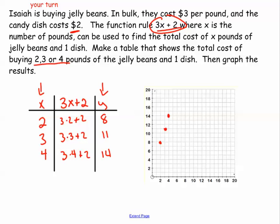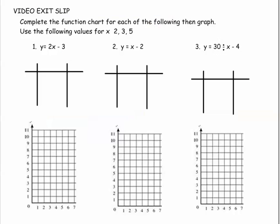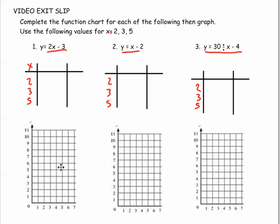Now it is your turn, kiddos. You have three problems for your exit slip. I'm going to give you that x is equal to 2, 3, and 5. Here are your function rules for three different problems. You're going to plug in these values for x: 2, 3, and 5 for all of them. Complete the function table and then graph them. Have a great day, guys.